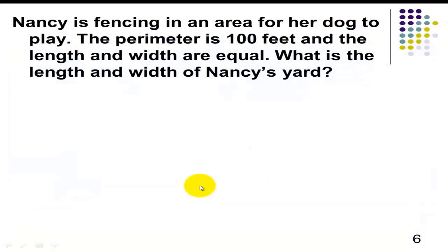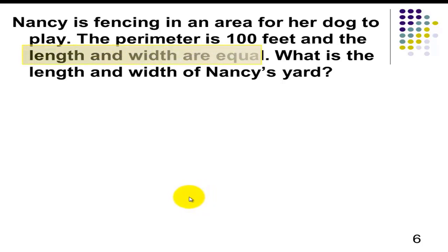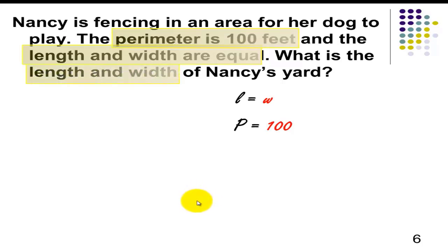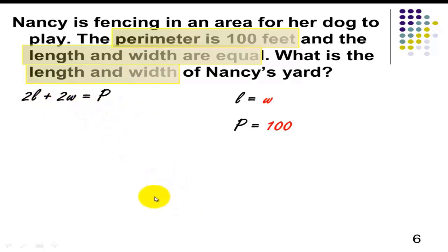Let's have our next problem. Nancy is fencing in an area for her dog to play. The perimeter is 100 feet, and the length and width are equal. What is the length and width of Nancy's yard? The given length and width are equal, so we can say L is equal to W. Perimeter is 100 feet, so P is equal to 100. Starting with the formula: 2L plus 2W equals P. Replacing L by W,